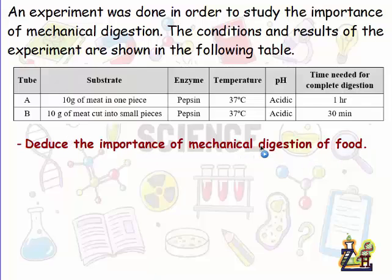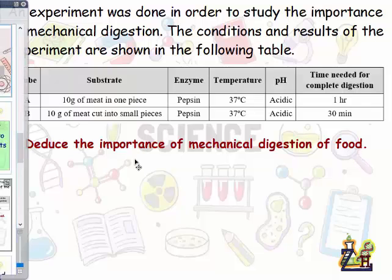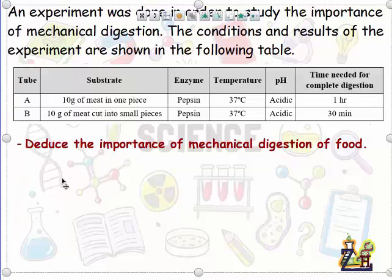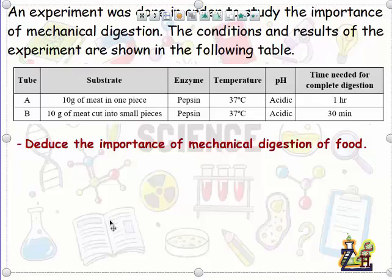Some of you might just give the answer directly — this is very wrong. As we said, we have to give the reasoning from the table and from the results of the experiment before we can give our answer. Now let's see how to answer this question.